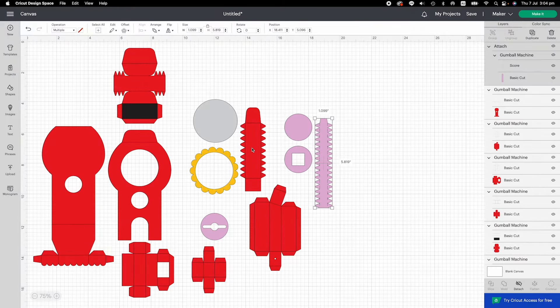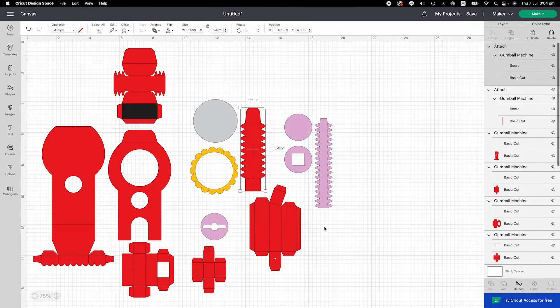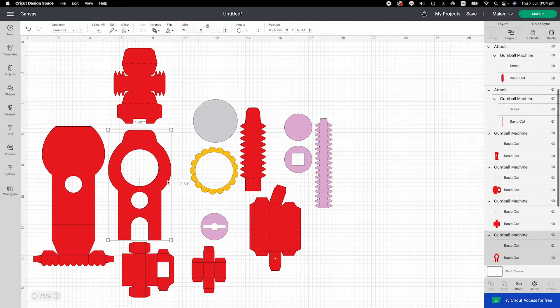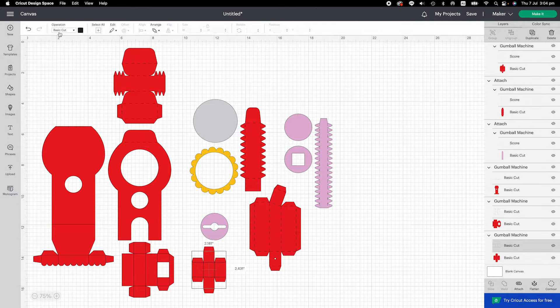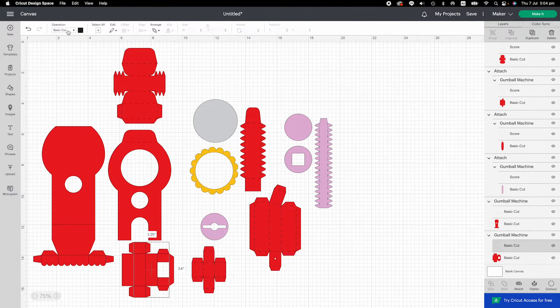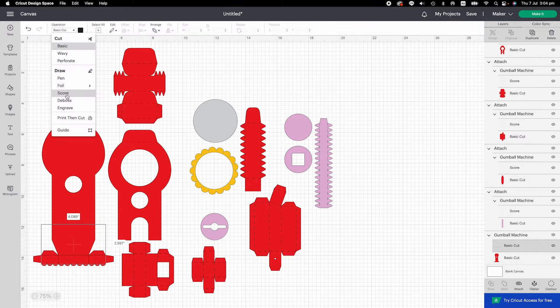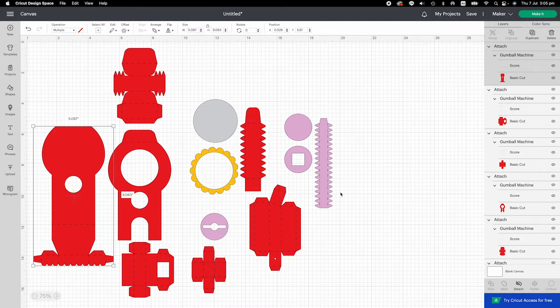Now change all the score lines for the rest of the elements. Basically, just repeat the same process for different pieces. Change the top layer to score lines and attach two sides together. Now we have changed all the score lines.